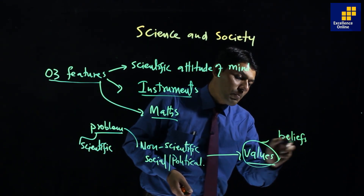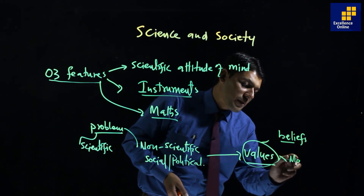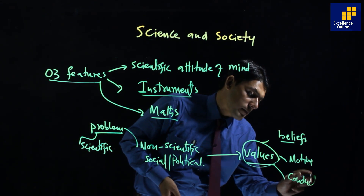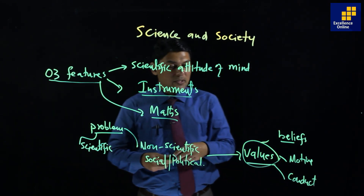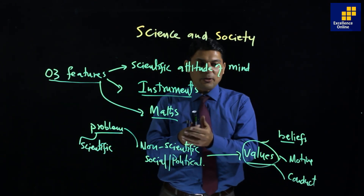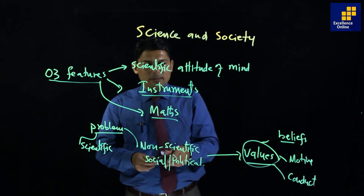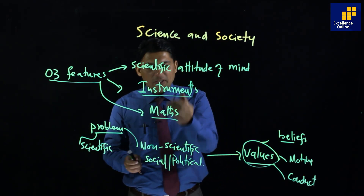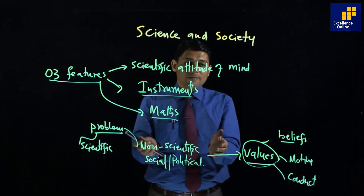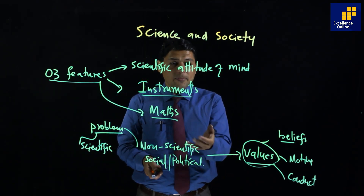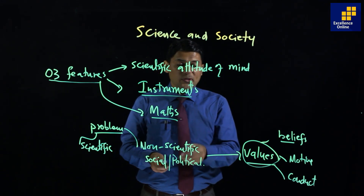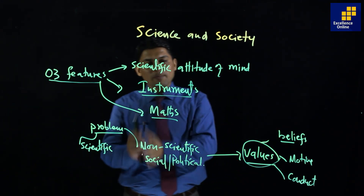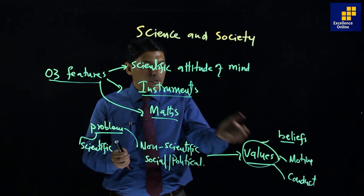Values depend on beliefs. The second factor is motive, and the last is conduct. One example of value differences in society is smoking. Smoking is dangerous. In Pakistan, smoking is common in society, but it damages a person's health. The same case applies to Pepsi or similar things. These also reflect values.